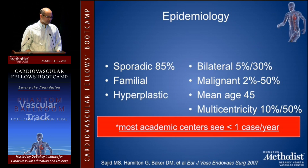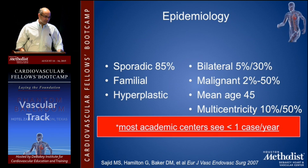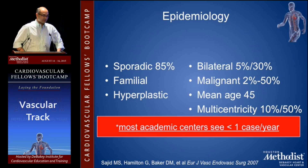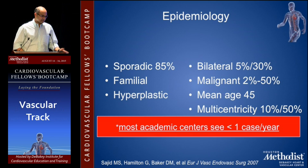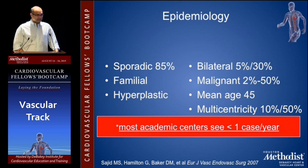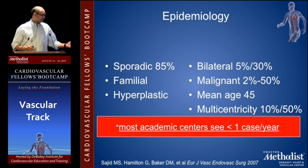The epidemiology of carotid body tumors — most academic centers see very few cases per year, so it takes a long time to become an expert. What's important is knowing the principles of how to approach one when you see it. 85% are sporadic, some are familial, and they can have hyperplastic or neoplastic changes — the neoplasms are the ones you want to target. They are bilateral in about 5 to 30%, malignant in about 2 to 50%. Mean age of presentation is about 45 years, slightly more common in women, and multi-centricity can vary from 10 to 50%.